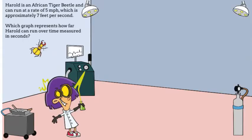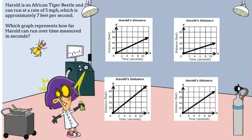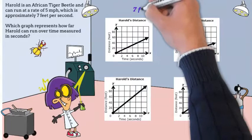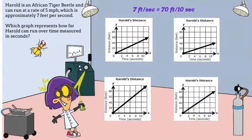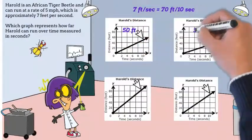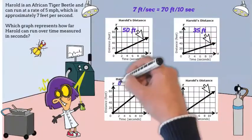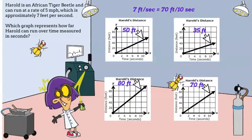This time, we want to know which graph represents how far Harold can run over time measured in seconds. We know that Harold can run seven feet per second. If we multiply by 10, this means 70 feet per 10 seconds. So let's look at the Y values when X is 10. The Y values are 50, 35, 80, and 70. That's right, Harold — the bottom right graph is correct.